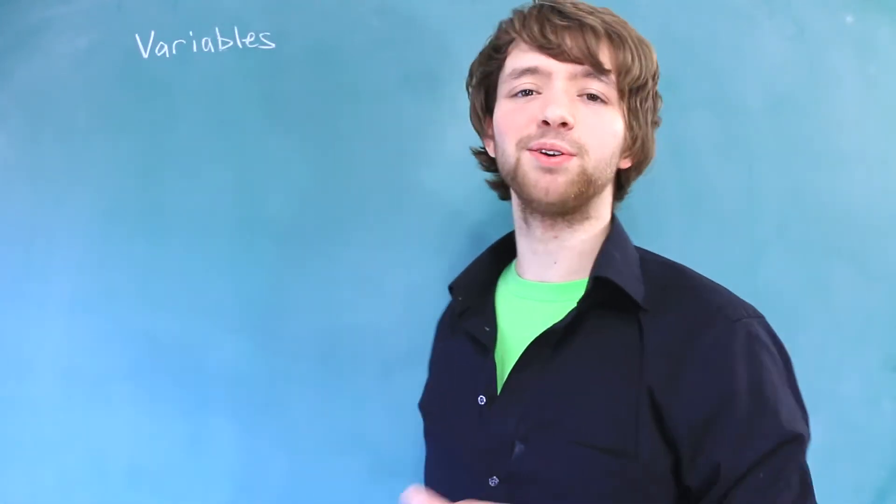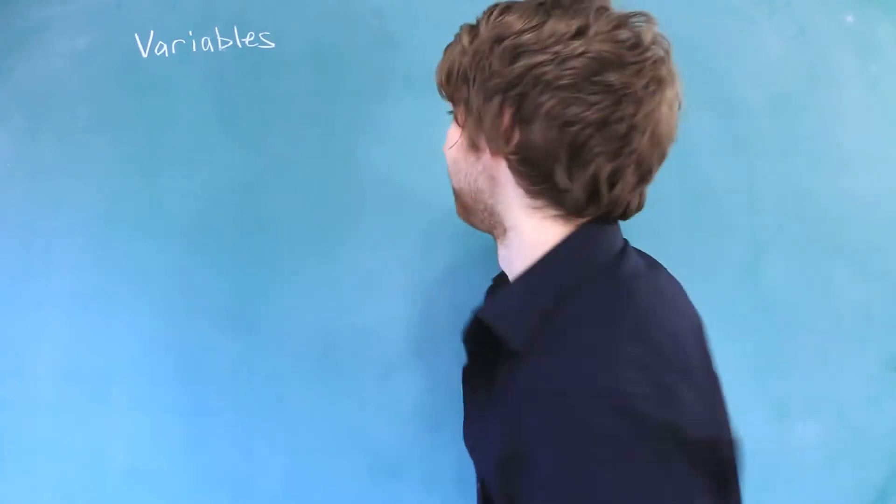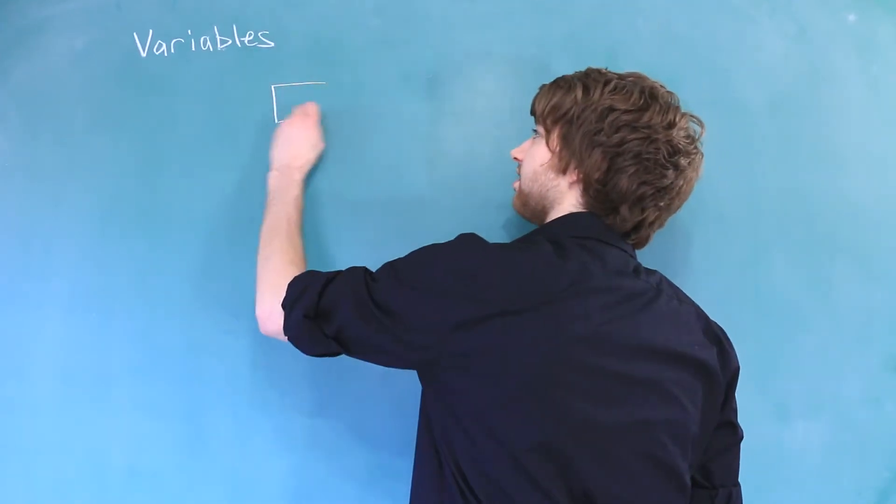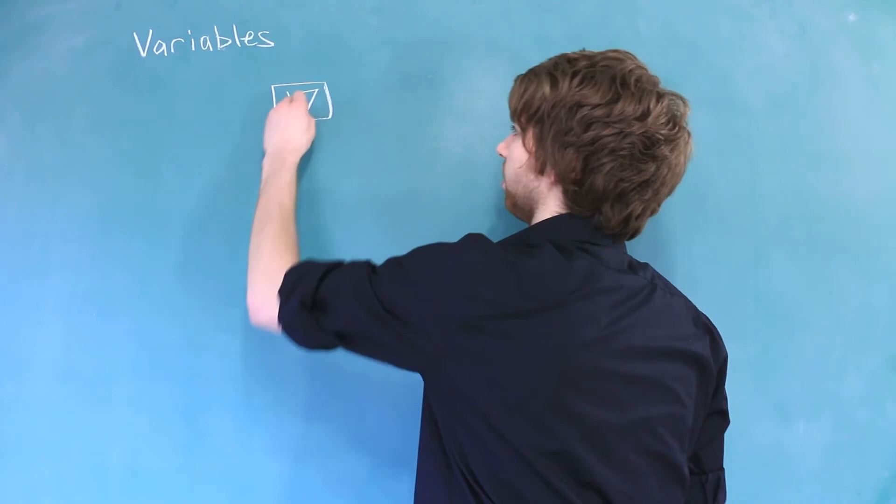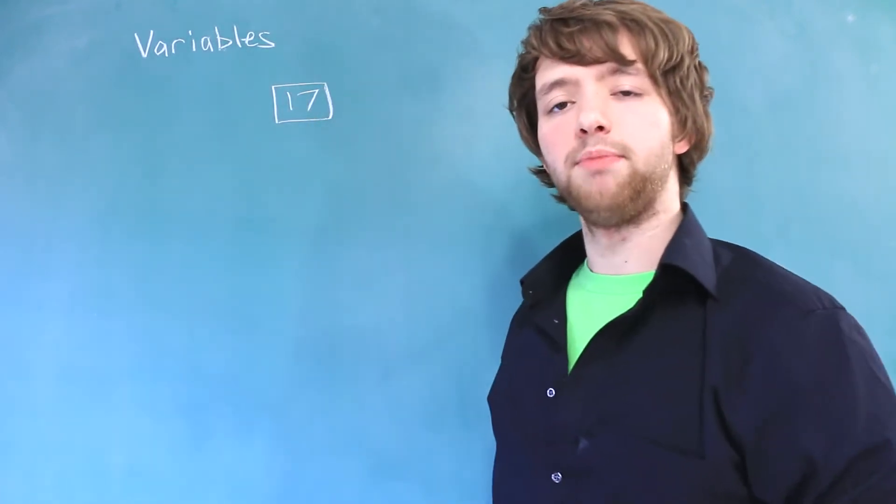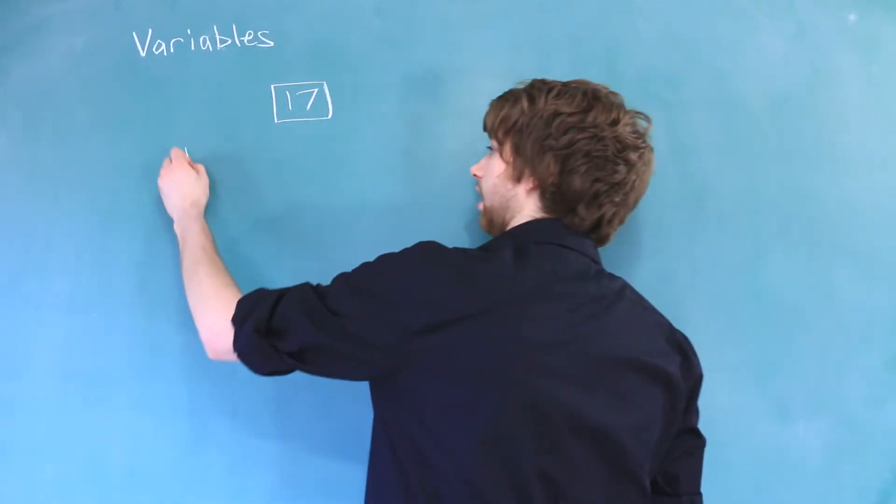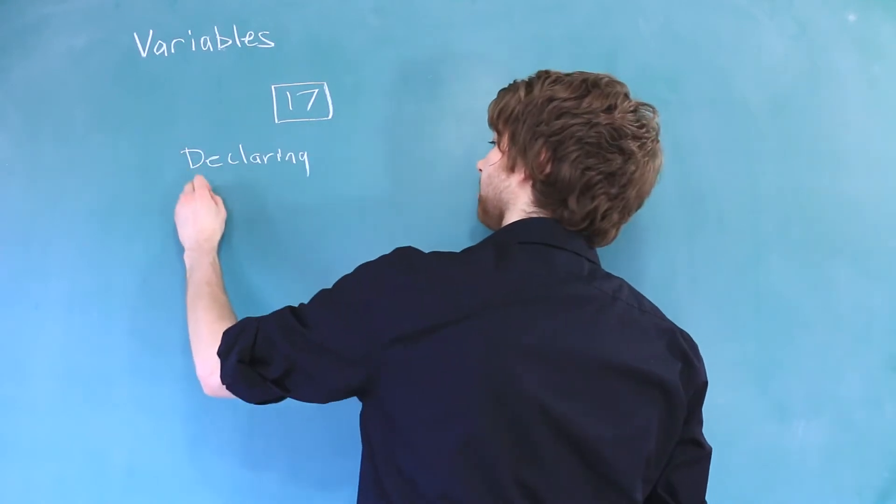Variables are used to temporarily store some value. So think of them as a box that you can put stuff in, like a number for example. One thing I wanted to make sure we have clear is the difference between declaring a variable and initializing a variable.